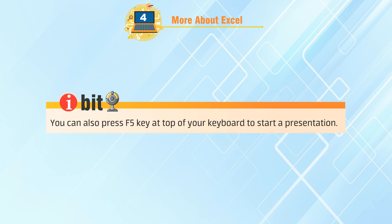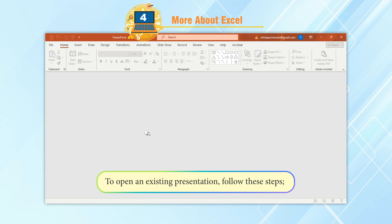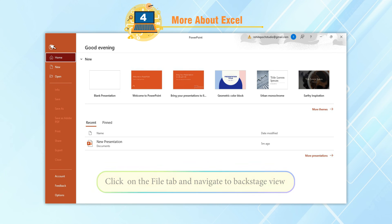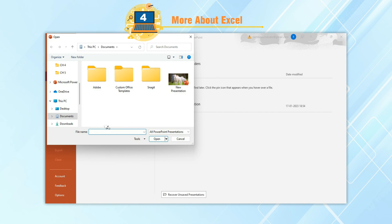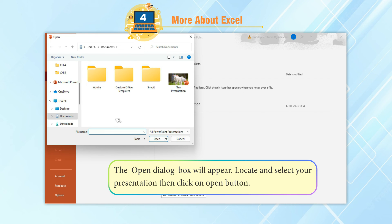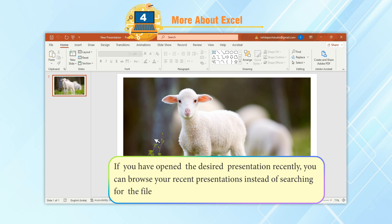You can also press the F5 key at the top of your keyboard to start a presentation. Opening an Existing Presentation: To open an existing presentation, click on the File tab and navigate to Backstage view. Select Open on the left side of the window. Click Browse — the Open dialog box will appear. Locate and select your presentation, then click the Open button. If you have opened the desired presentation recently, you can browse your recent presentations instead.